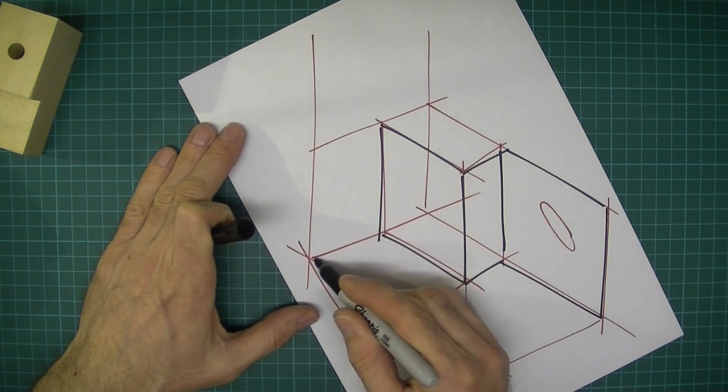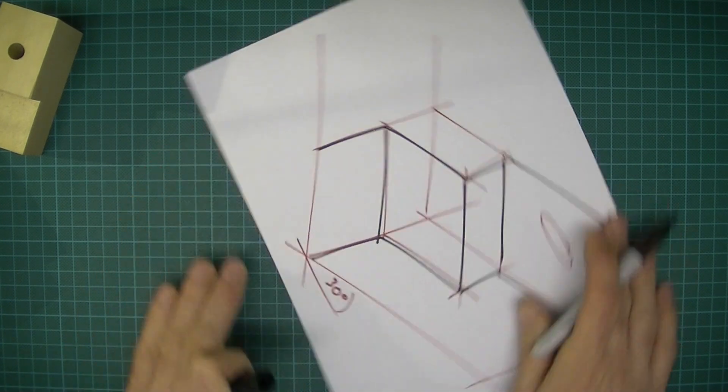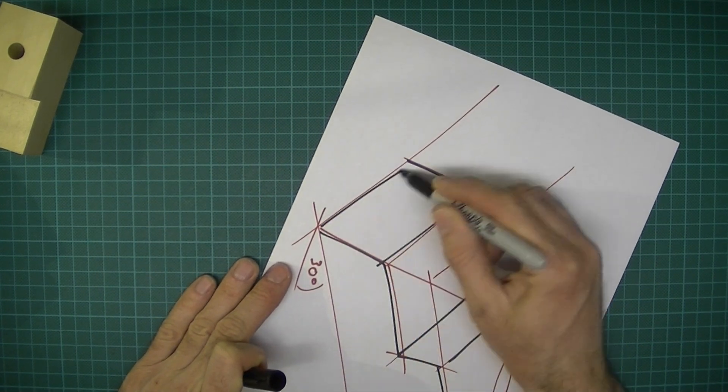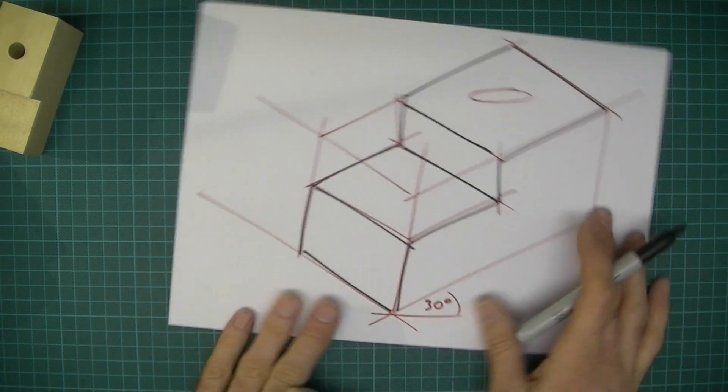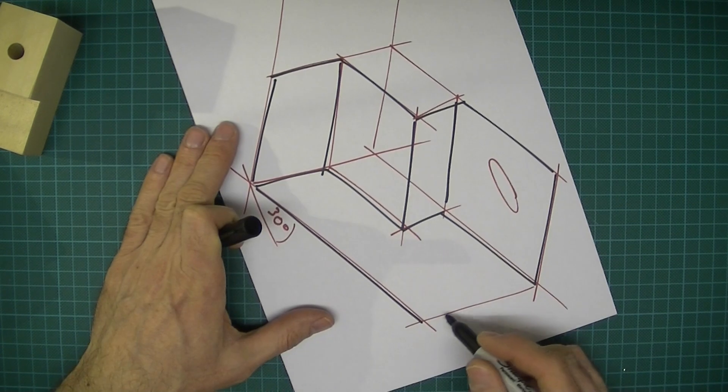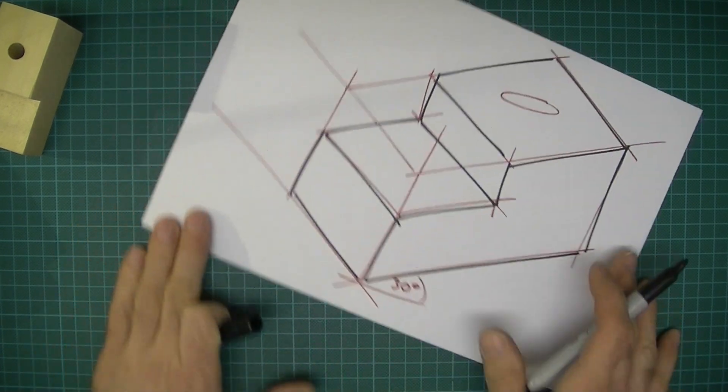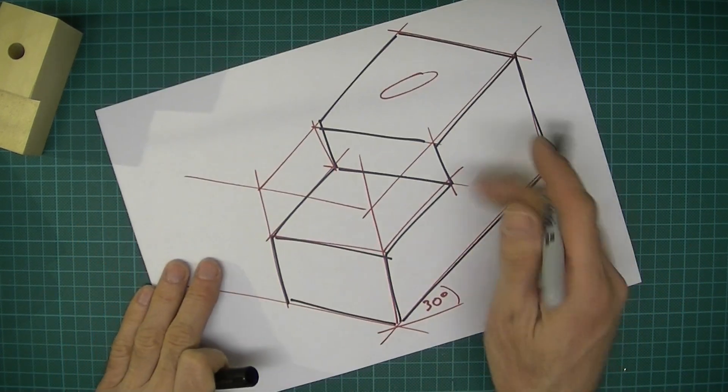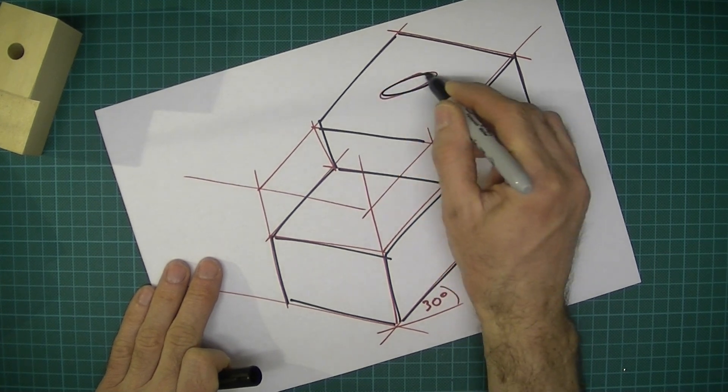And notice I'm not taking any measurements. I mean, you could be measuring with a ruler, you could make things straighter as well, but generally speaking, isometric projection like this, it's just a bit of a 3D representation of what it could look like.